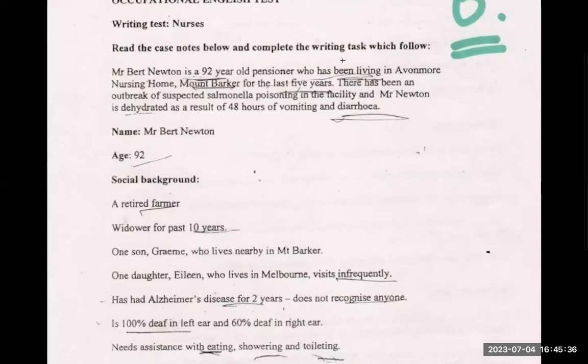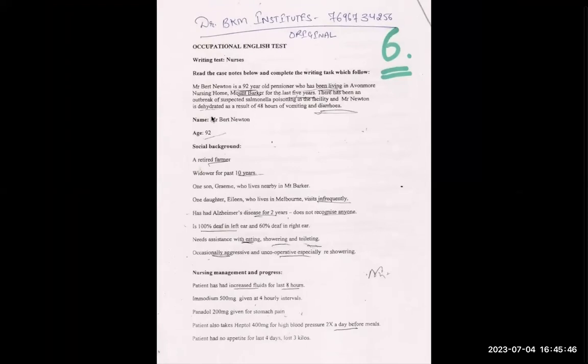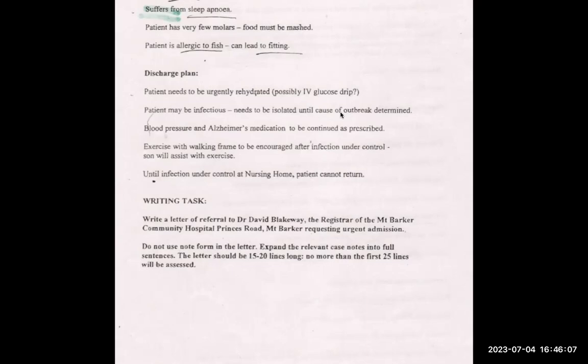There has been an outbreak of suspected Salmonella poisoning — we are suspecting it, it is not confirmed. That is why the patient cannot return unless the infection is under control. Since it may be Salmonella poisoning — and 'maybe' means suspected — the patient may be infectious and needs to be isolated until the cause of the outbreak is determined. If it were a diagnosed case, the phrasing would be different.